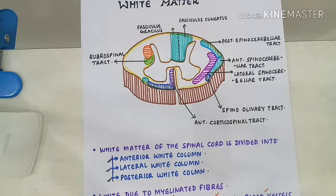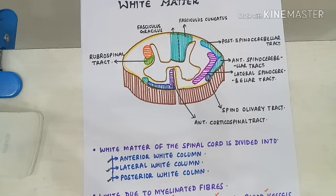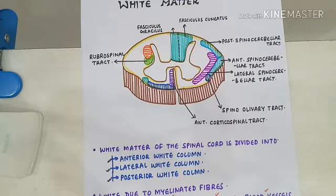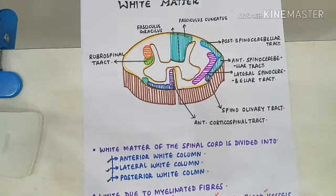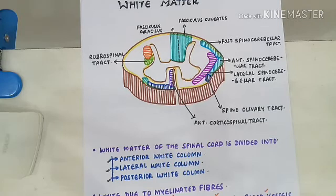The white matter of the spinal cord is due to the myelinated fibers. Wherever the myelinated fibers are present, it gives the appearance of white. So the white matter consists of nerve fibers, neuroglia cells, and blood vessels, and the appearance of white is due to the myelinated fibers.